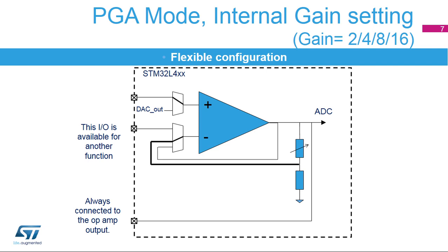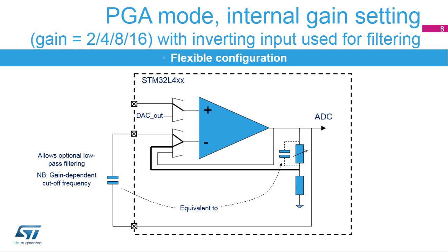The STM32L4's op-amps support non-inverting amplifier mode with four fixed gains available. The feedback resistors can be selected to have a gain of 2, 4, 8, or 16 to support the programmable gain amplifier function. It may also be beneficial to use the op-amp as an ADC input so that the full dynamic range of the analog-to-digital converter can be applied to signals having a small amplitude.